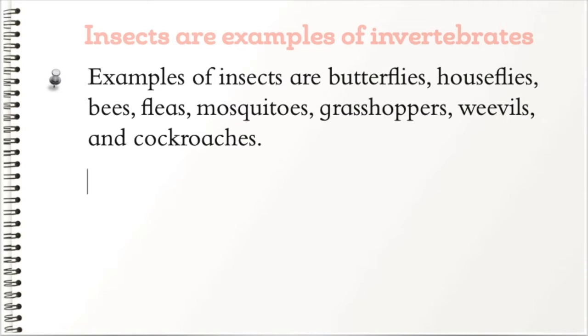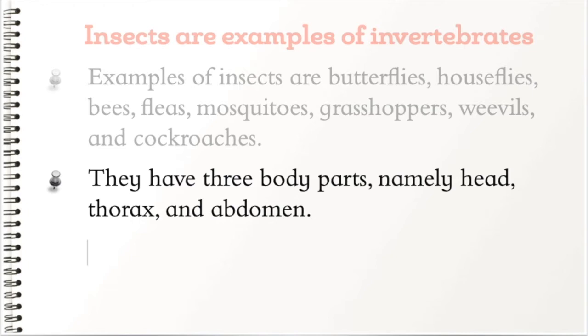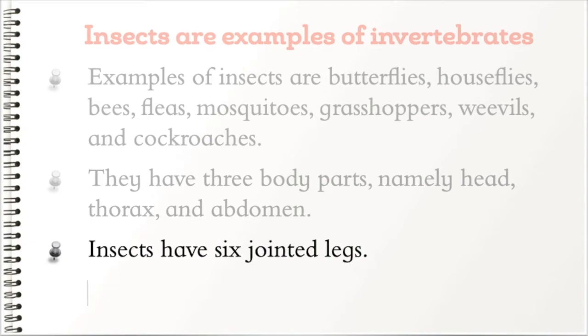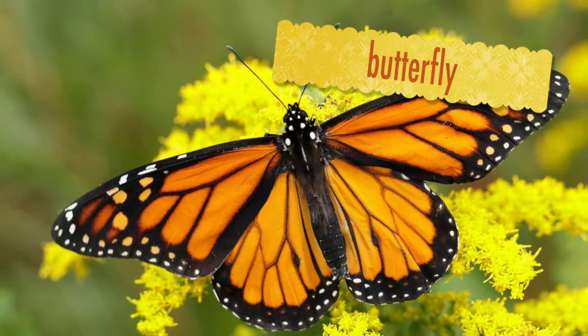Insects have three body parts, namely head, thorax, and abdomen. Insects have six jointed legs. Insects use wings to fly, though not all insects fly.